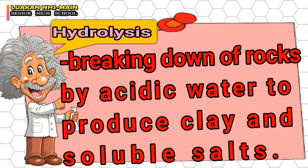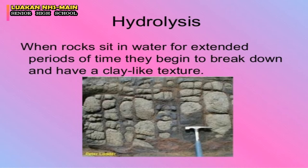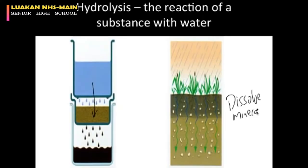The next process is hydrolysis — the breaking down of rocks by acidic water to produce clay and soluble salts. As mentioned, water is a major factor in chemical weathering, because in this type of weathering water is involved in changing the composition of the rock.